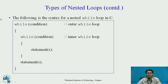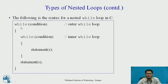Next we take the nested while loop. The following is the syntax. This is the outer while loop, and inside that we have the inner while loop. Once control transfers to the inner while loop, the statements within that block are executed. When the inner while loop terminates, the remaining statements of the outer while loop execute, and the iteration continues as expected.